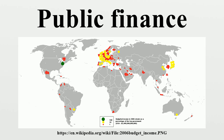Taxation is also needed to draw away money that would otherwise go into consumption and cause inflation to rise. A tax is a financial charge or other levy imposed on an individual or legal entity by a state or a functional equivalent of a state. Taxes could also be imposed by a subnational entity. Taxes consist of direct tax or indirect tax and may be paid in money or as corvée labor. A tax may be defined as a pecuniary burden laid upon individuals or property to support the government — a payment exacted by legislative authority. A tax is not a voluntary payment or donation, but an enforced contribution exacted pursuant to legislative authority.